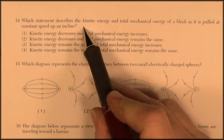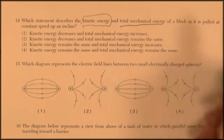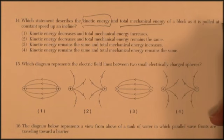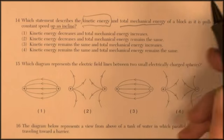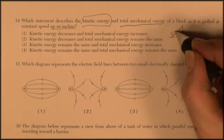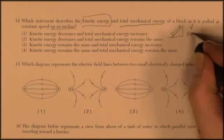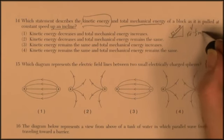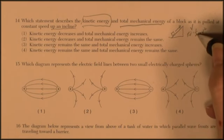Which statement describes the kinetic energy and the total mechanical energy of a block that's pulled at a constant speed up an incline? So we're going up a hill at a constant velocity. Well, kinetic energy is 1 half mv squared, so if the velocity isn't changing, neither is the kinetic energy.